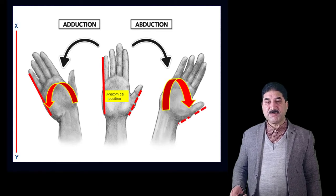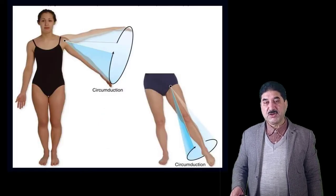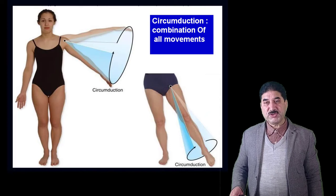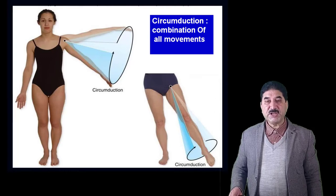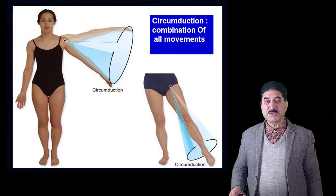Circumduction is defined as the combination of all movements. For example, at the shoulder joint the possible movements are flexion, extension, abduction, adduction, and the combination of all these movements is called circumduction. The same is true of the hip joint.